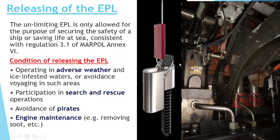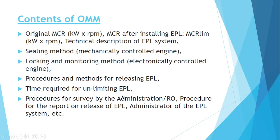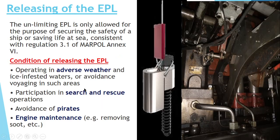The engine power limitation — the fuel index limiter — is released from time to time. We can release it if there is an adverse weather condition such as ice or heavy weather. Or we are taking part in a search and rescue operation, avoiding pirates, or carrying out engine maintenance like removing soot. While unlocking, we have to mention the amount of time for which we unlocked, what are the latitude and longitude, why it was unlocked, and the same needs to be informed to the class.